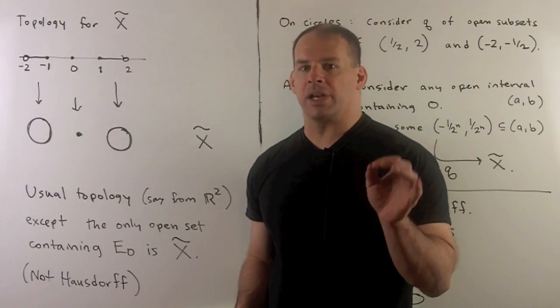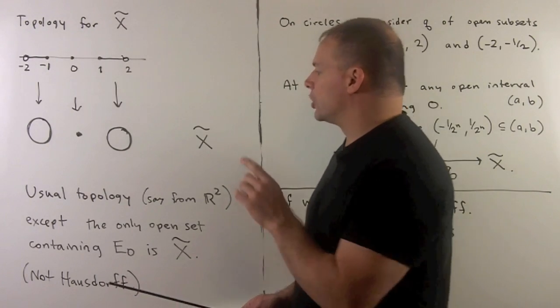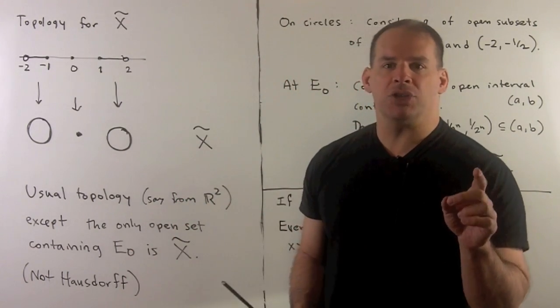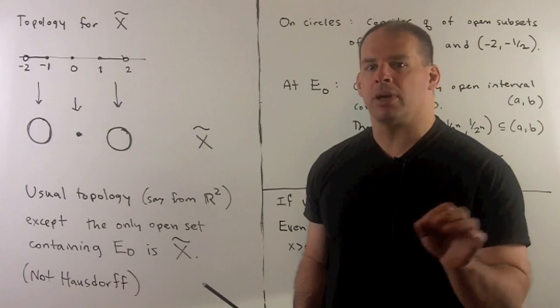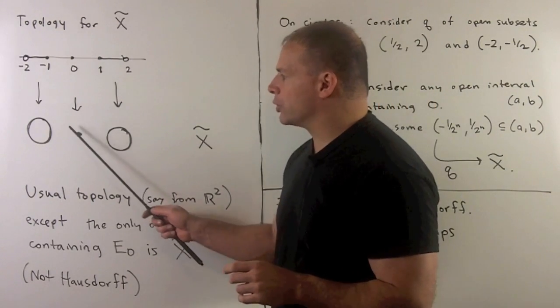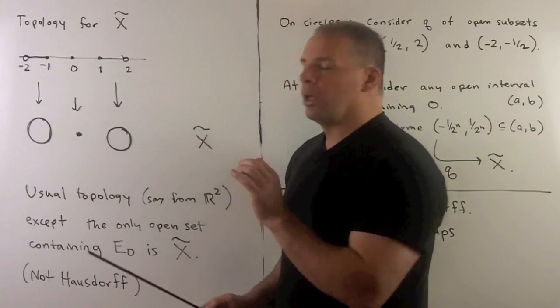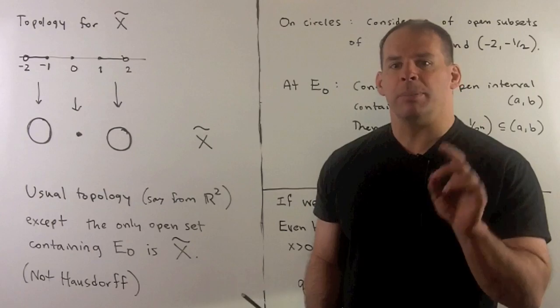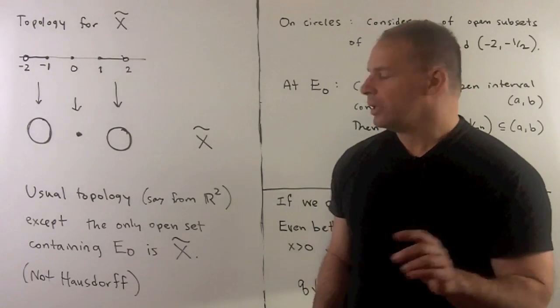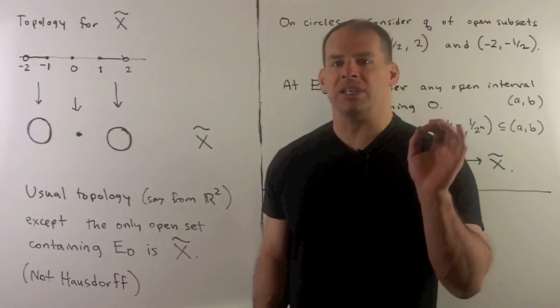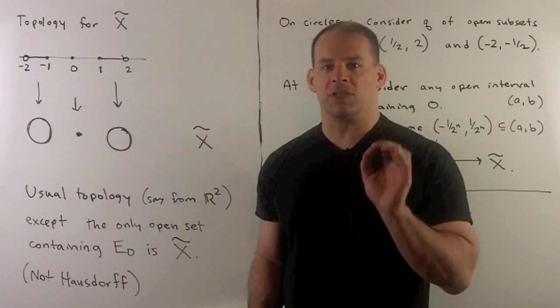With that, we have the topology for x tilde. Our space, we have two circles and a point. The topology is going to be the usual topology coming from the plane, so we have the usual topology on the circles. For the point, the only open set that contains that point is going to be all of x tilde. So this space is not Hausdorff since we can't separate E0 from any other point in the space.